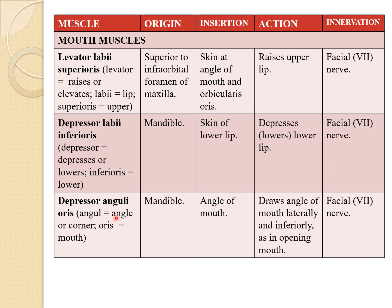The next is the depressor anguli oris. 'Oris' means mouth. It also originates at the mandible and inserts at the angle of the mouth. The major action of the depressor anguli oris is to draw the angle of the mouth laterally and inferiorly, as in the opening of the mouth. It is also innervated by the facial nerve.